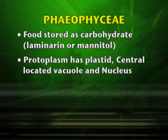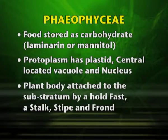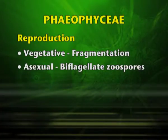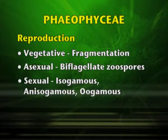Protoplasm has plastids and they have a centrally located vacuole and nucleus. The plant body is attached to the substratum by a holdfast, a stalk known as the stipe, and frond which are the leaf-like appendages. Reproduction may be by vegetative means through fragmentation; asexual reproduction by biflagellate zoospores; and sexual reproduction is isogamous, anisogamous and oogamous.